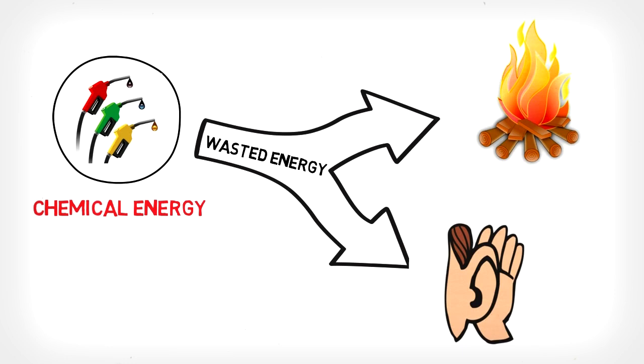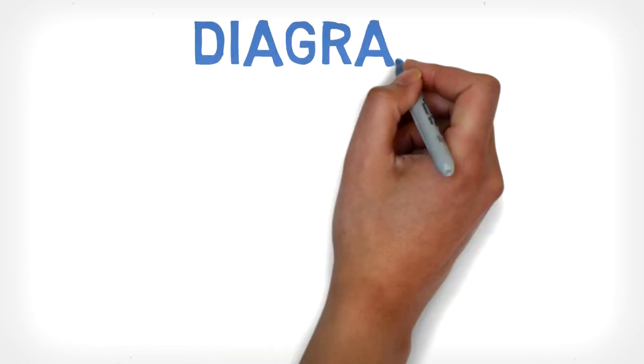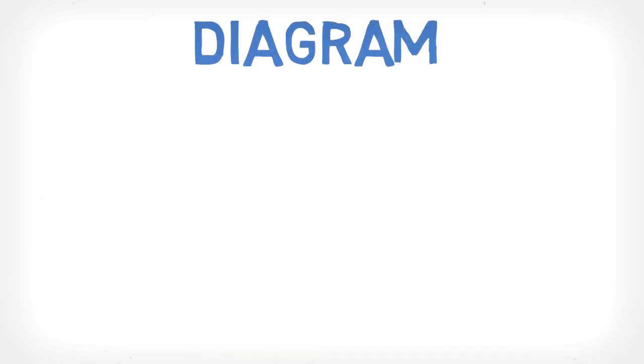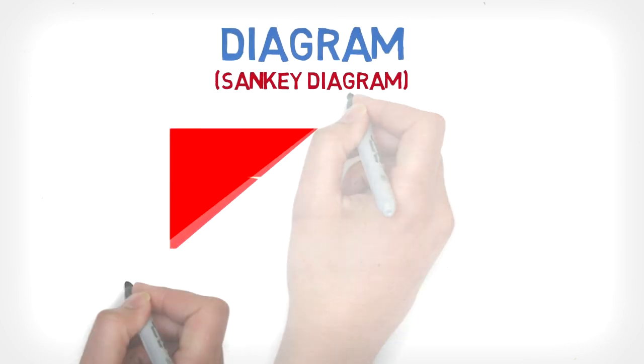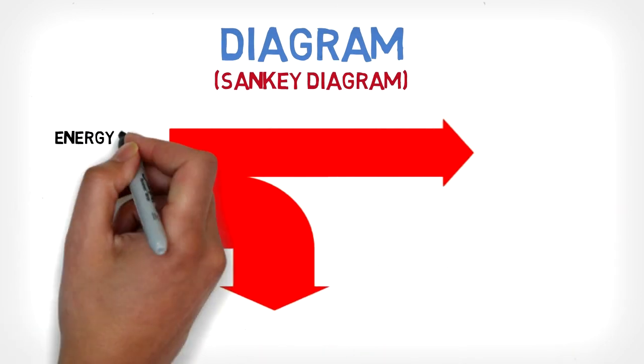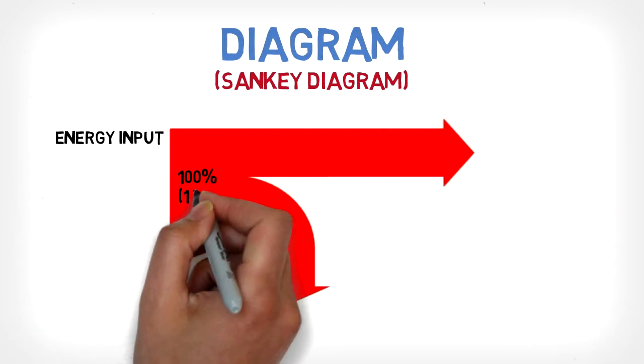In physics, if you want to show how energy is stored and converted, you need to draw a diagram. One of the simplest diagrams is called the Sankey diagram. If we want to create a Sankey diagram to show the energy transformation in a car, the energy input is 100 percent, and in this example it is chemical energy.